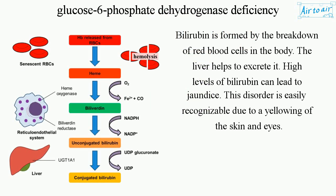Bilirubin is formed by the breakdown of red blood cells in the body. The liver helps to excrete it. High levels of bilirubin can lead to jaundice, a disorder easily recognizable due to a yellowing of the skin and eyes.